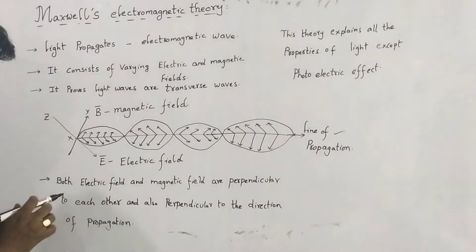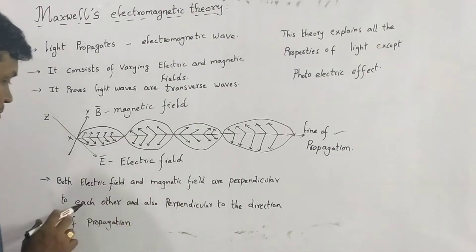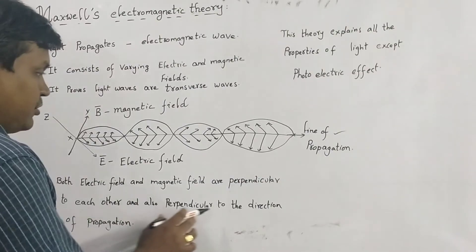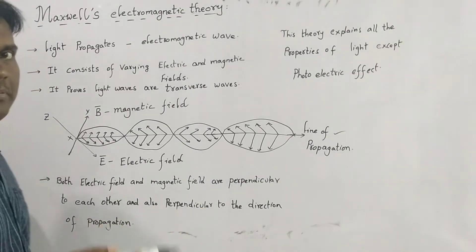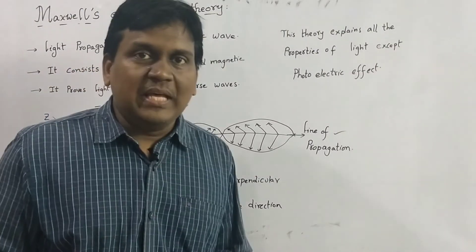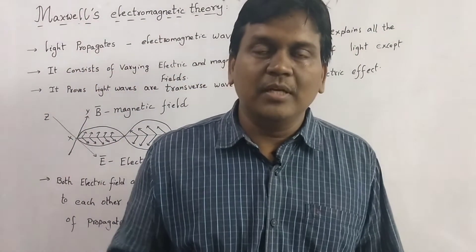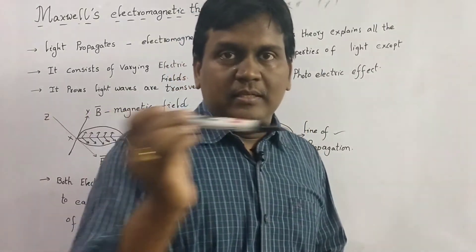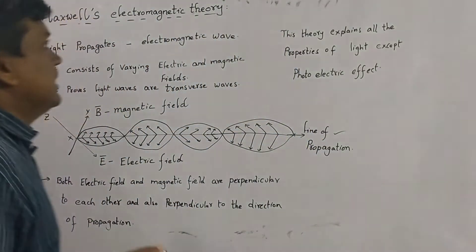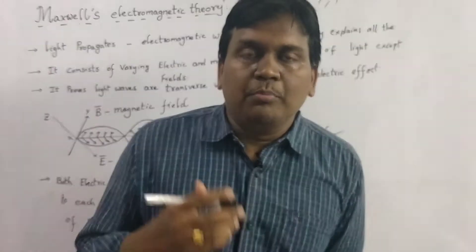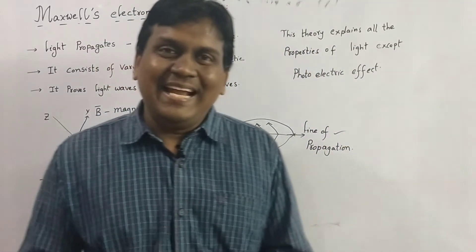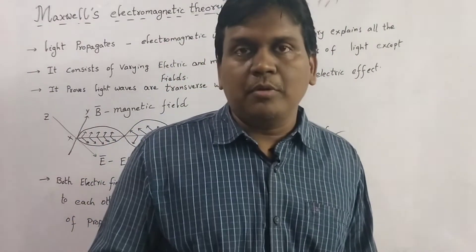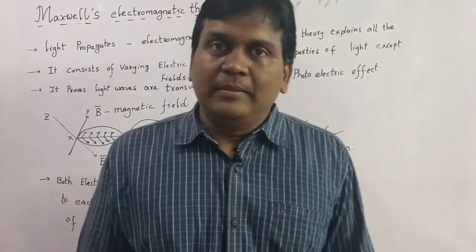Both the electric field and magnetic field are perpendicular to each other and also perpendicular to the direction of propagation of light. This theory proves all the properties of light except the photoelectric effect.